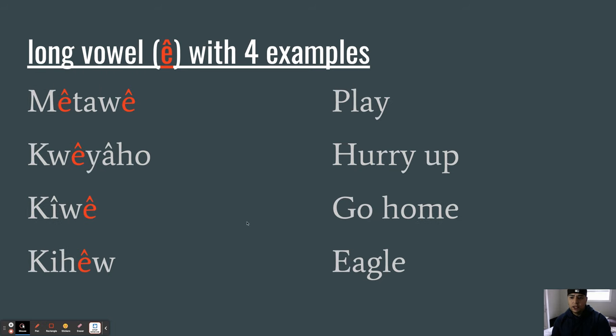Long vowel E with four examples. Mêtawê, play. Kwiyaho, hurry up. Kîwê, go home. Kîhiw, eagle. Really listen in for that E. Mêtawê, play. Kwiyaho, hurry up. Kîwê, go home. And Kîhiw, eagle.